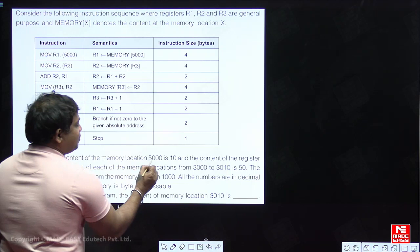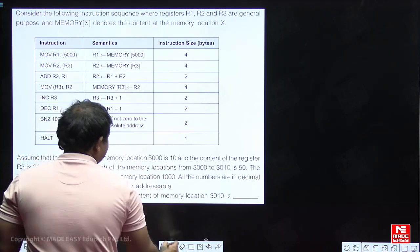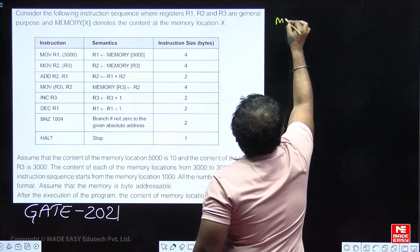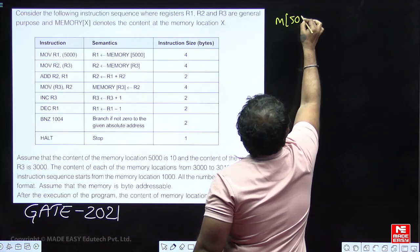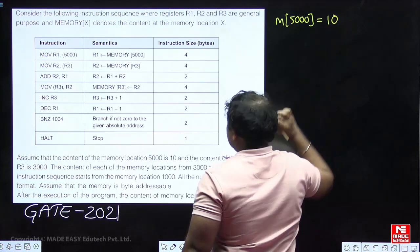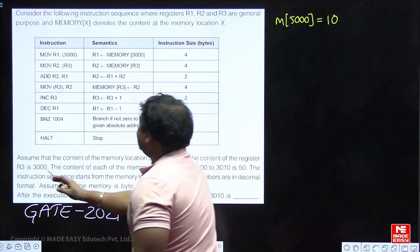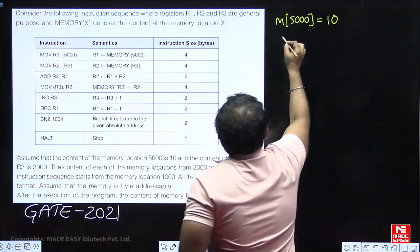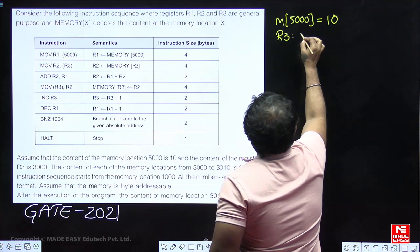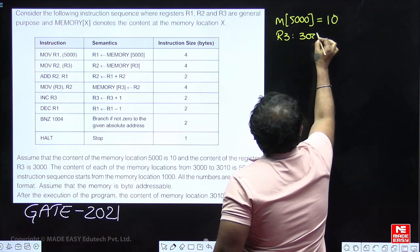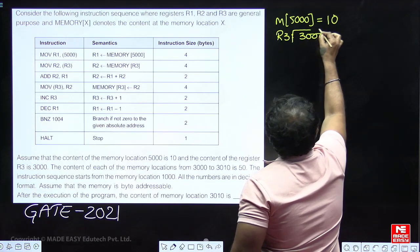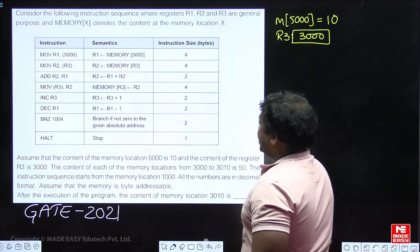Assume that the contents of memory location 5000 is 10, so memory[5000] = 10. And the contents of register R3 is 3000, so R3 contains 3000.